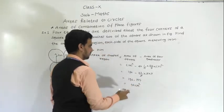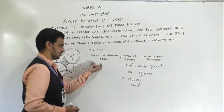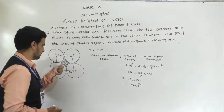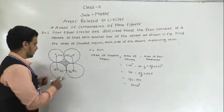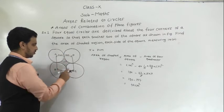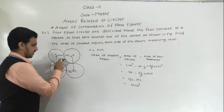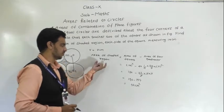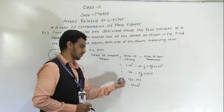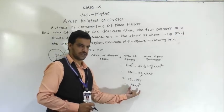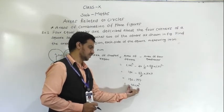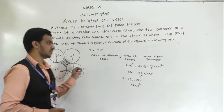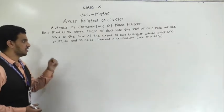So the area of the shaded region is 42 cm². To summarize: area of square minus area of four quadrants gives us the shaded region. Now we will take the next example.